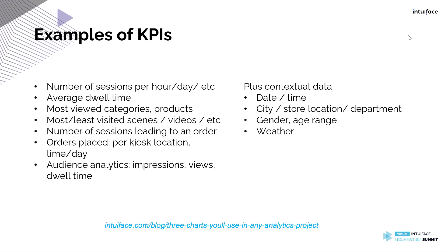So what are some examples of KPIs and other insights that you can get using analytics? To start with, maybe you want to look at the number of sessions per hour, per day, etc. — it could be useful to know how often your signage is being used. Maybe you're interested in average dwell time — you can gain additional insights from knowing how long someone is using your experience. And then there's most viewed and least viewed — it could be the most viewed categories, products, scenes, or videos. Or it could be the least viewed scenes, videos, categories, or products. It's good to know what people are looking at, but it's also really good to know what they're not looking at, because that may lead to different changes in your content or your strategy.